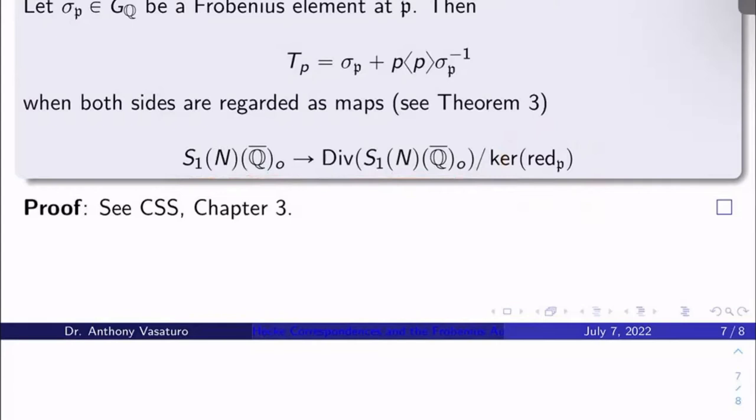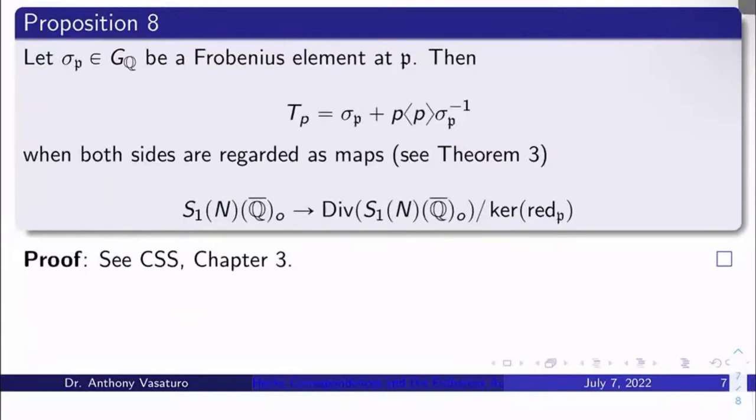But I can also view the right-hand side in the same way, right? I can definitely take like elliptic curves here, or classes of elliptic curves. I can act on them with Frobenius at ℘. I can also certainly act on them with inverse of Frobenius at ℘. I know the p-th diamond automorphism will allow me to take the resulting elliptic curve here after I do this action and spit out another elliptic curve.